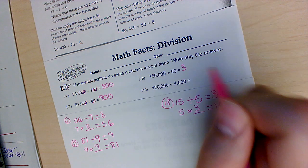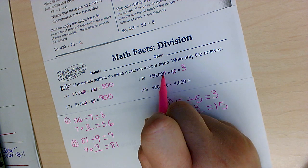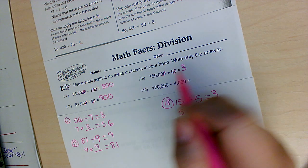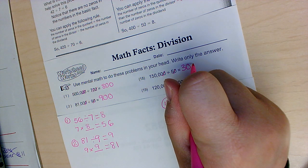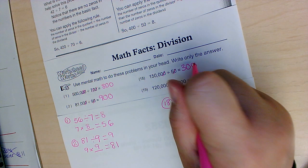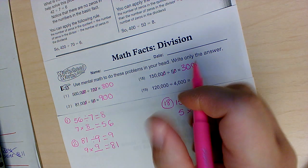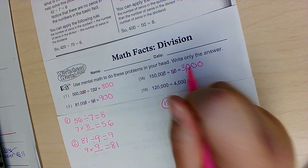I know my answer is going to start with 3. I'm going to do my zeros. 1, 2, 3, so 3 zeros. So 150,000 divided by 50 is 3,000.